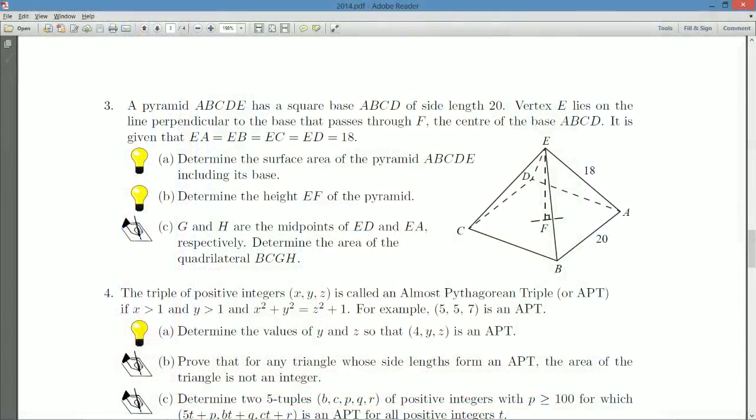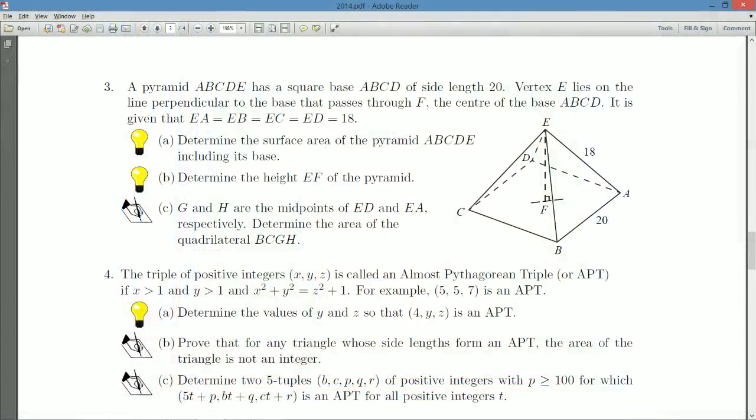All right, here we are. A pyramid ABCDE has a square base with a side length of 20. Vertex E lies on the line perpendicular to the base that passes through F, the center of the base ABCD. We're told that EA, EB, EC, and ED all are length 18. Remember our side length is 20.